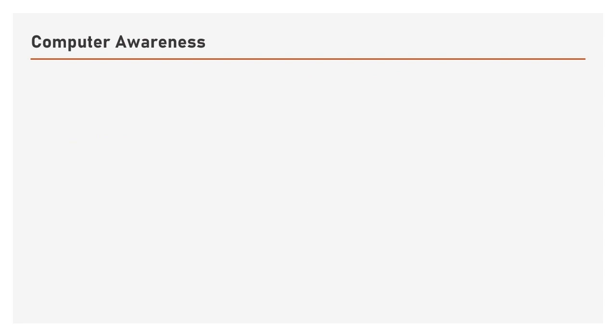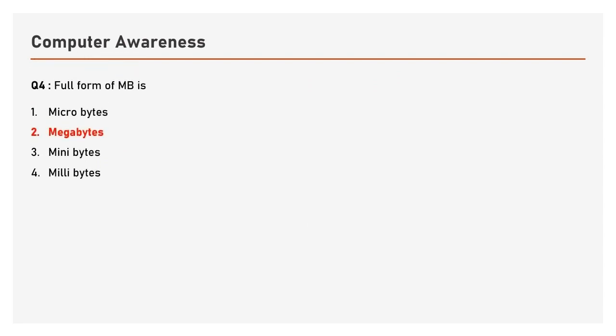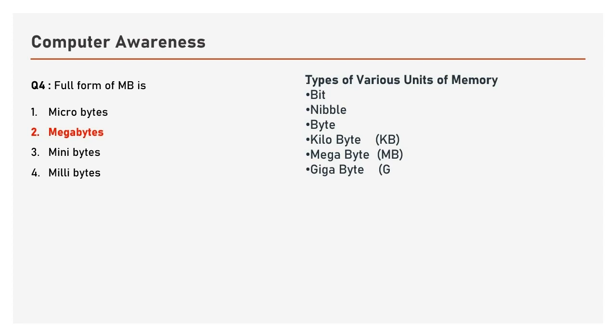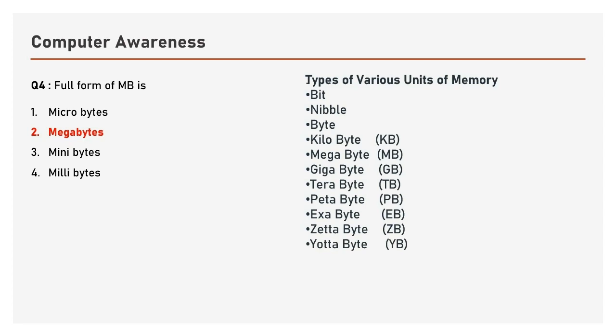Question number 4: Full form of MB is — options are Microbytes, Megabytes, Minibytes, Millibytes. The answer is Megabytes. The various units of memory are: Bit, Nibble, Byte, Kilobyte (KB), Megabyte (MB), Gigabyte (GB), Terabyte (TB), Petabyte (PB), Exabyte (EB), Zettabyte (ZB), Yottabyte (YB).